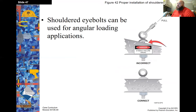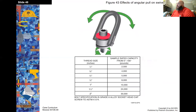Shouldered eye bolts can be used for angular load applications. The shoulder must be firmly contacting the material it's attached to. Swivel eye bolts allow you to pull at multiple angles safely.